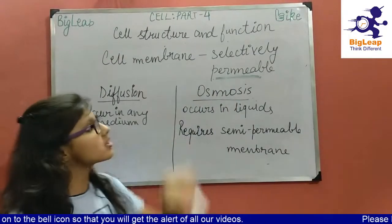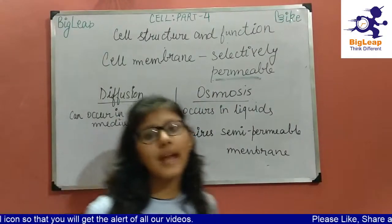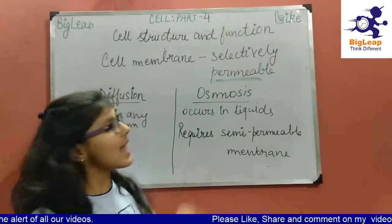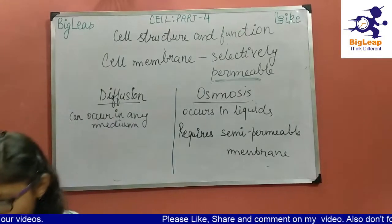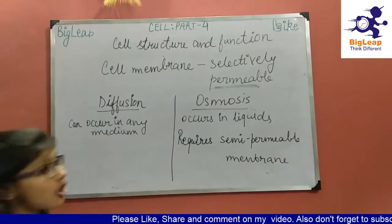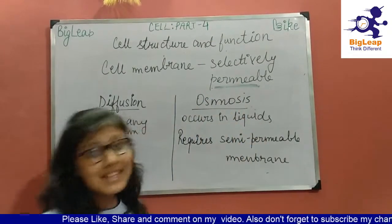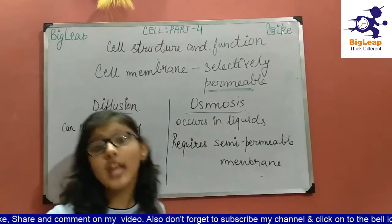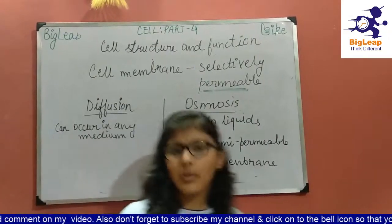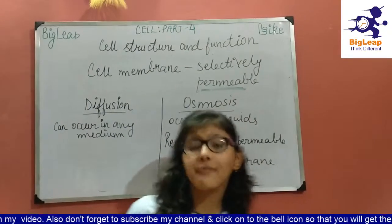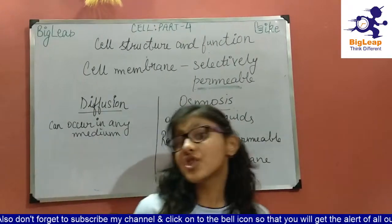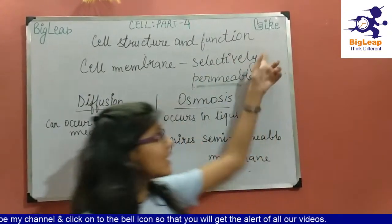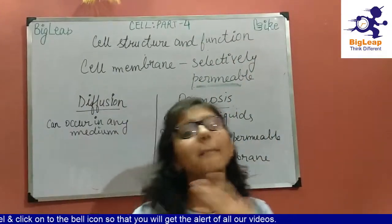The cell membrane has several functions: it protects the cell from foreign injuries, it controls the movement of substances in and out of the cell, it gives shape to the cell, and it acts as a selectively permeable membrane.